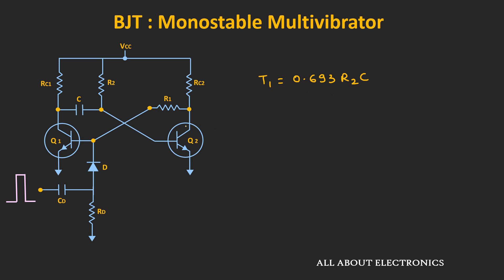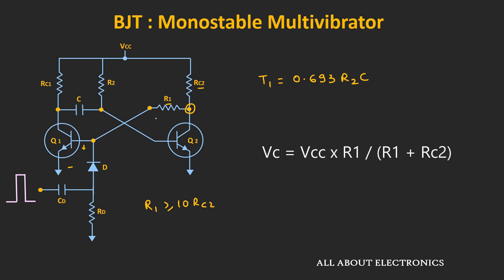The output voltage in the unstable state depends on Rc2 and R1. If we want the output voltage close to Vcc, the value of R1 should be at least 10 times higher than Rc2. When the circuit operates in the unstable state, Q1 is ON, and the collector voltage can be found by applying the voltage divider rule or by applying KVL in the loop.